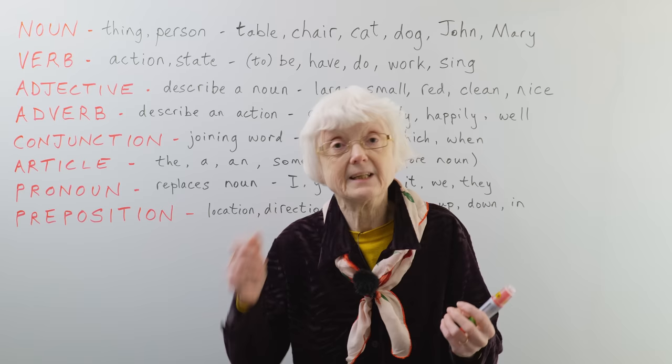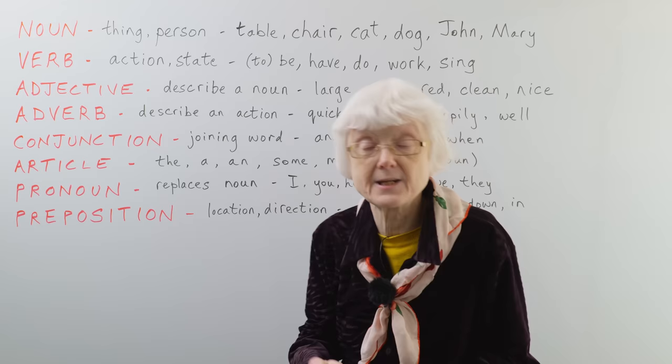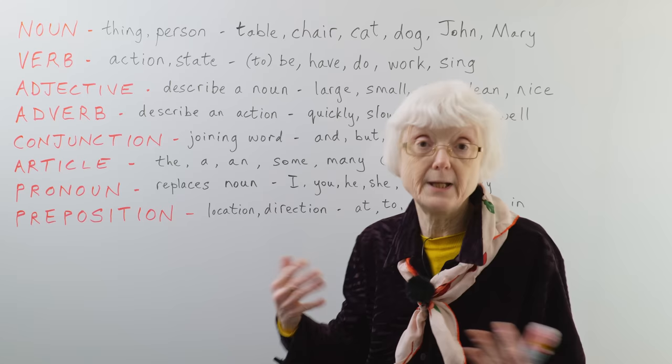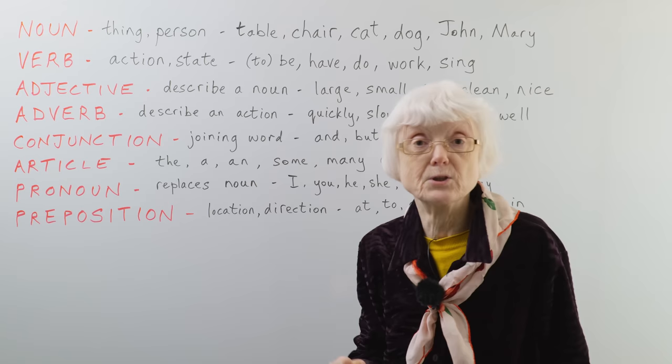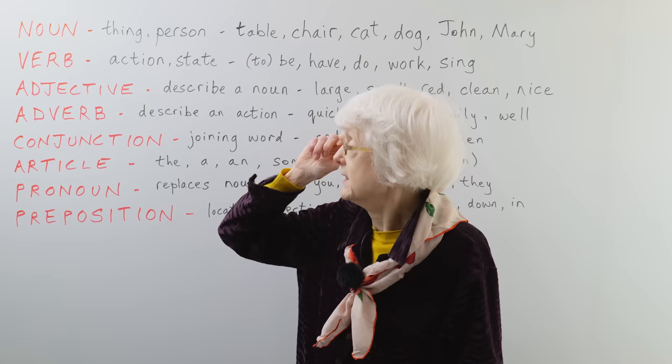Proper nouns are the ones which are things, objects, or animals. So those are things and people, sometimes concepts, abstract concepts as well.